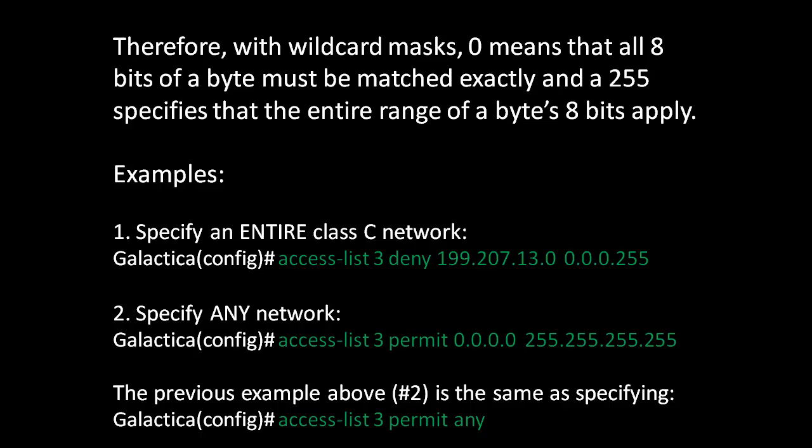Examples. To specify an entire class C network, we would do access-list, a number between 1 and 99, then deny or permit, the source IP address, and then the mask. In this case, the first three octets — 199, 207, and 13 — have zeros in the mask, meaning those octets must be matched exactly. The last part, 255, corresponds to the zero in the fourth octet, meaning any host on that network would all be denied access. To specify any network, we could say access-list, a number from 1 to 99, permit, and then 0.0.0.0 255.255.255.255, which means any network.